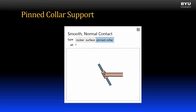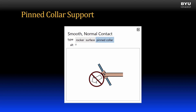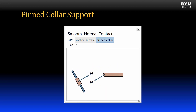A similar support is a pinned collar. In this support, the collar is around a smooth bar and can translate in the direction of the bar. It cannot penetrate through the bar. So we get a single reaction force normal to the direction of the bar. The pin between the collar and the body allows the end of the body to rotate, so there is no moment reaction. Note that the force can be a push or a pull on the body.